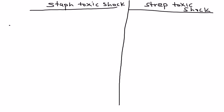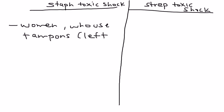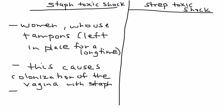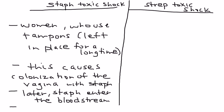Staph Toxic Shock occurs in women, and in particular the risk factor is women who are using tampons. Regular use is not really the big problem — the problem is when tampons are left in place for a long time. This creates a perfect environment for Staph to grow, eventually causing colonization of the vagina with Staph, which can then enter the bloodstream. Staph Toxic Shock can also happen after childbirth, certain surgical procedures, and after abortion.